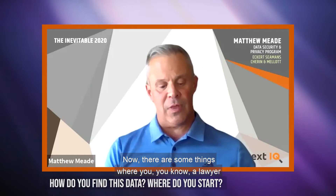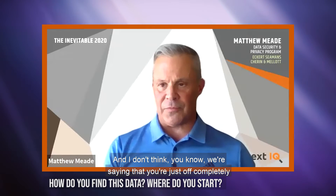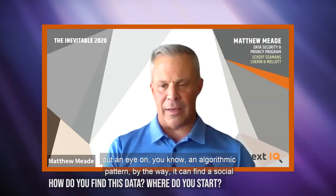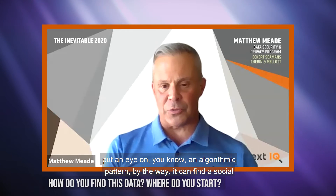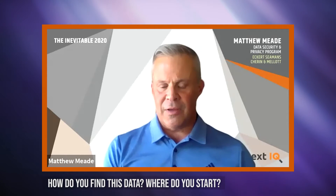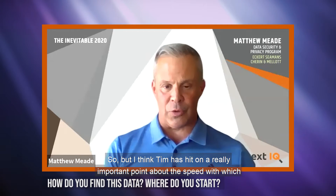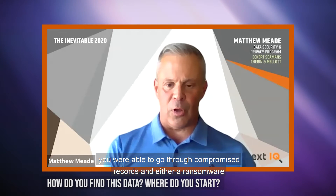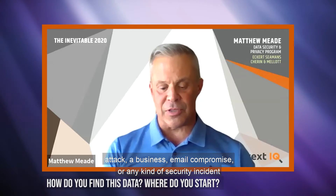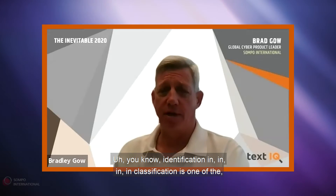There are some things a lawyer certainly has to look at — we're not saying you're completely outsourcing this. But by reducing the amount lawyers have to actually put an eye on, an algorithmic pattern can find a social security number much faster than a human ever could in a 50-page PDF. The speed with which you're able to go through compromised records in a ransomware attack, a business email compromise, or any kind of security incident is critical.